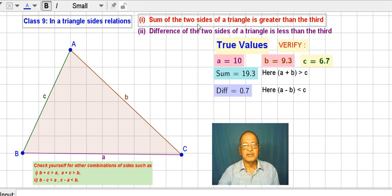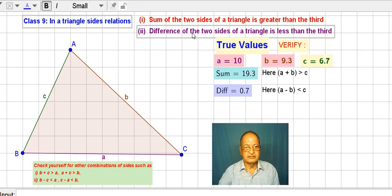Number one, sum of two sides of a triangle is greater than the third side of the triangle. And second part is, difference of two sides of a triangle is less than the third side.